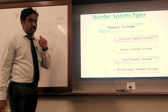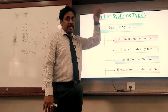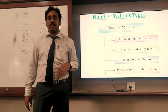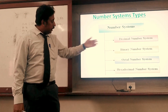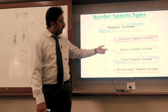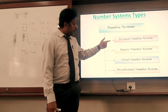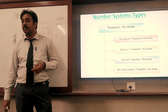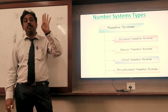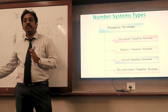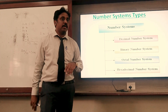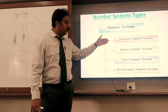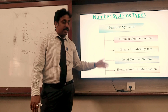There are mainly four types of number systems. One is the decimal number system. Then there is the binary number system. Similarly, you have the octal number system, and also the hexadecimal number system. So there are totally four main number systems: decimal, binary, octal, and hexadecimal.